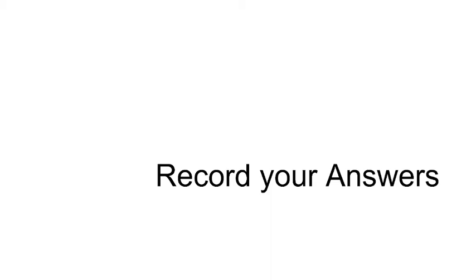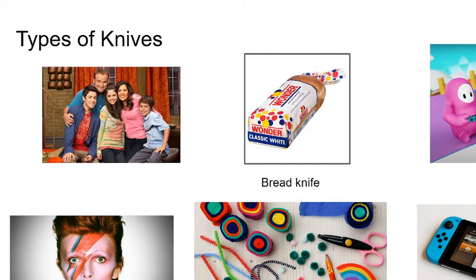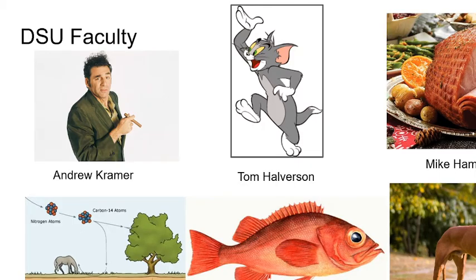I think the last one is the carbon cycle. So the answers for our blenders example: we had Fall Out Boy, Kiss, and AC/DC. The red herrings were Among Us, Princess Peach, and Zac and Rank. Types of knives: a bread knife, Bowie knife — this is David Bowie — a craft knife, and a switchblade. Then we had Wizards of Waverly Place and Fall Guys. For the last one we had Andrew Kramer, Tom Halverson, and Mike Ham. Then the carbon cycle, a literal red herring, and a dog.